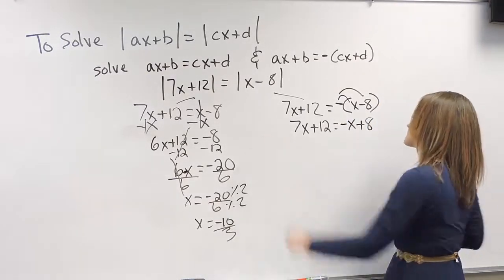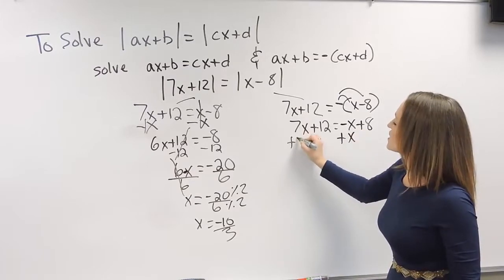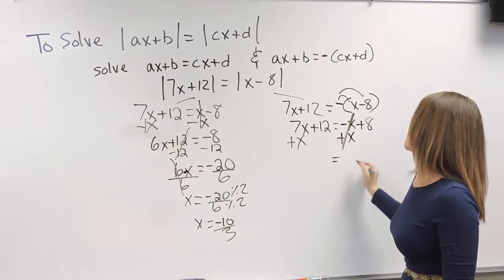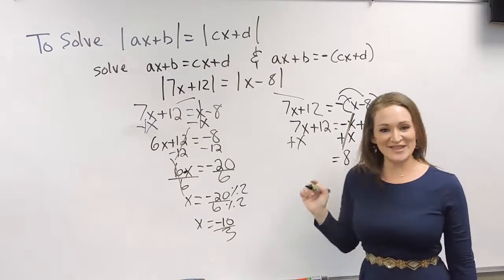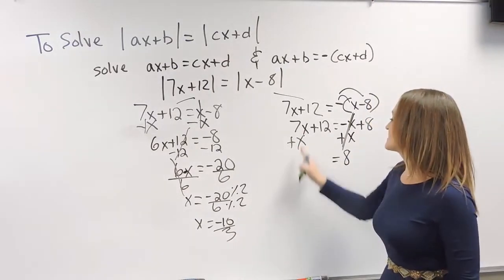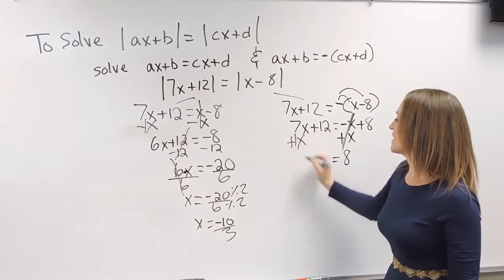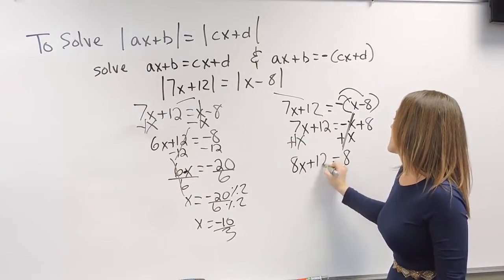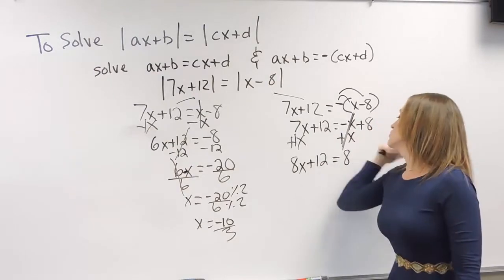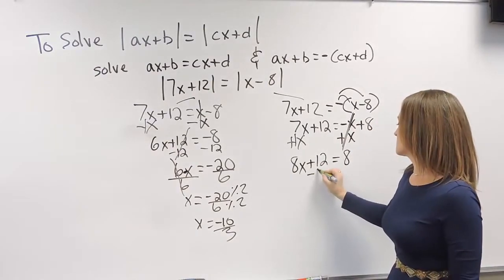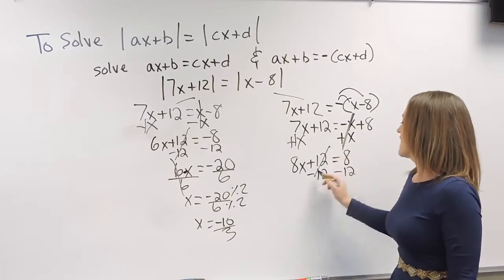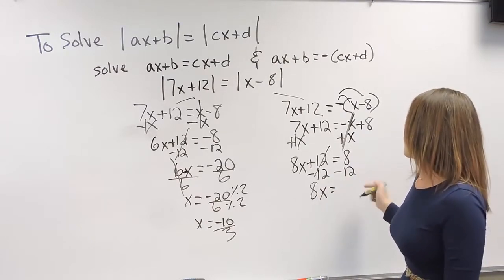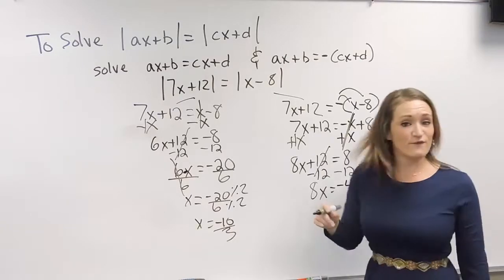So I'm going to move x to the left-hand side. So here I'm going to add x on both sides. Negative x plus x cancels. And we're going to drop down that 8 there. On the left-hand side, 7x plus 1x is 8x. And then drop down that plus 12. Move the 12 over to the other side. So let's do minus 12 on both sides. And that's going to give us 8x is equal to 8 minus 12 gives us a negative 4.